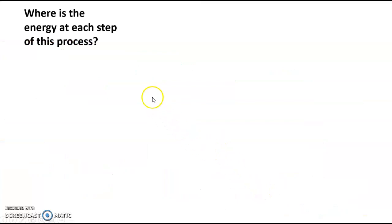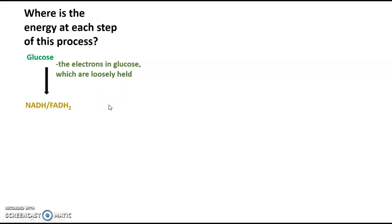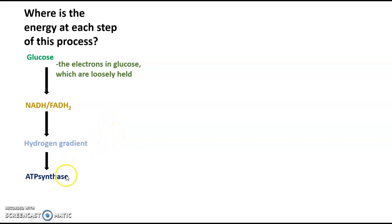Where is the energy at each step of this process? The energy in glucose is in the electrons, which are loosely held in carbon-hydrogen bonds. Those electrons get picked up by NAD and FAD to form NADH and FADH2. Those electrons are dropped off in the electron transport chain, and the energy of bumping them down the chain is used to form a hydrogen gradient — a form of potential energy. That hydrogen gradient powers the ATP synthase to spin, allowing ADP to have a phosphate added to form ATP. This is a very indirect process, which is why we always give a range of ATPs made per glucose.